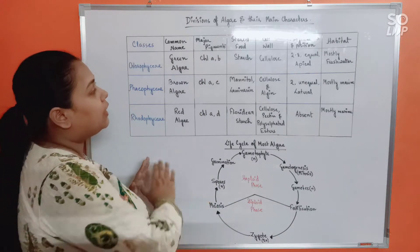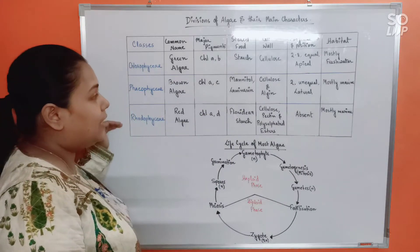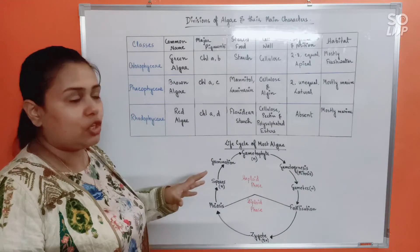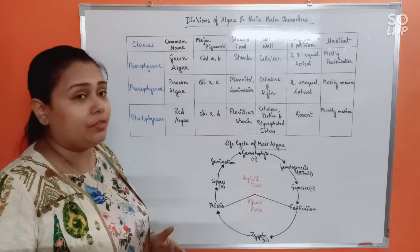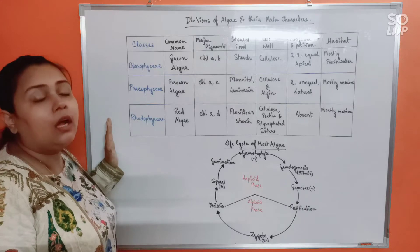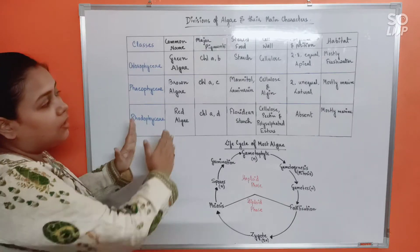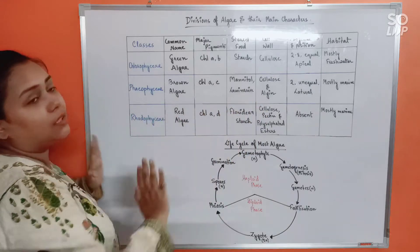So here clearly you are getting a scenario of how the three types of algae are differing from each other. This particular chart is very, very, very important for you to remember. Many questions have been asked in NEET from this particular table itself, so this is very important to remember.